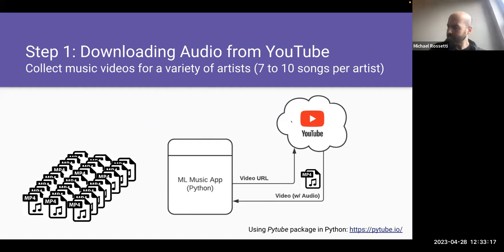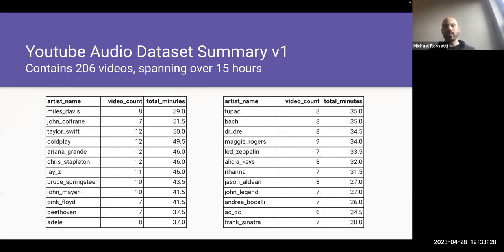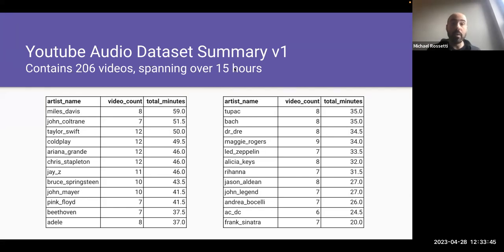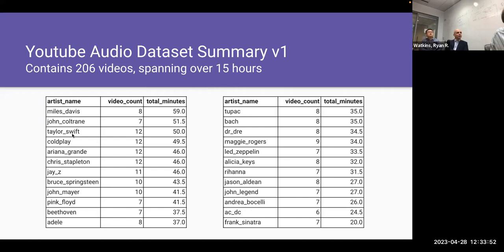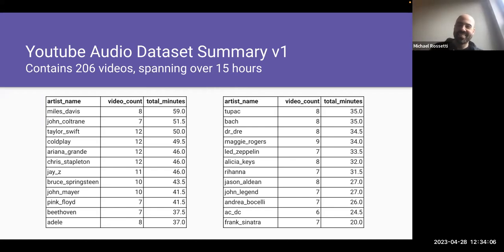How many artists? I have 24 artists. We have between 20 to 60 minutes of total audio length per artist. Obviously more would be better, but just a little constrained in the collection effort. We have over 15 hours of audio from 206 videos total. Miles Davis's songs are really long and Frank Sinatra was really short - those are the quick, short little happy tunes. Miles Davis would just go on forever with lots of jamming.